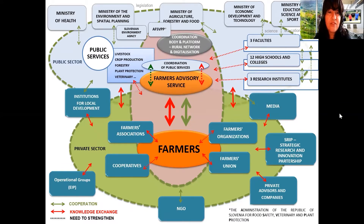The central stakeholders in the ECIS system are the farmers and their professional and other organizations. The upper part of the scheme defines the public sector, which is the holder of research in agriculture, formal education and public services, including the public farm advisory service.